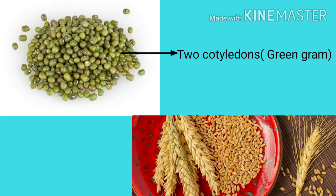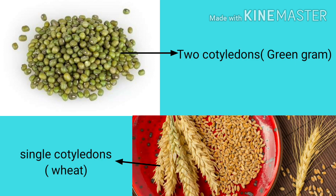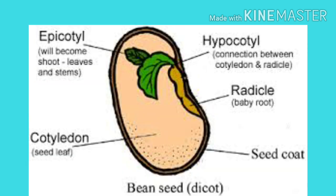On the embryo axis is present a cotyledonary node. The node bears two cotyledons in dicots and a single cotyledon in monocots. The area of the embryo axis between the cotyledonary node and the plumule is called epicotyl. The area between the cotyledonary node and the radicle is called hypocotyl.